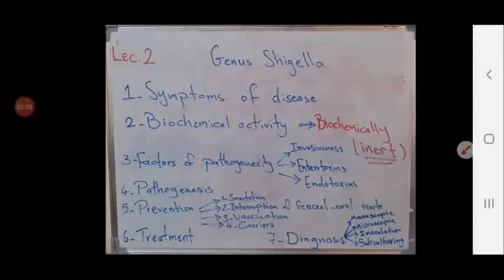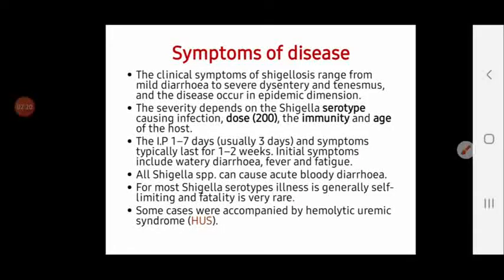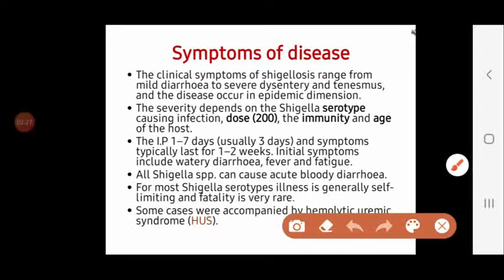Today we will discuss seven points about genus Shigella: symptoms of disease, biochemical activity, factors of pathogenicity, pathogenesis, prevention, treatment, and diagnosis. Starting with symptoms, the clinical presentation ranges from mild diarrhea to severe dysentery. All four groups initially cause watery diarrhea, and in severe serotypes this progresses to dysentery and bloody diarrhea.